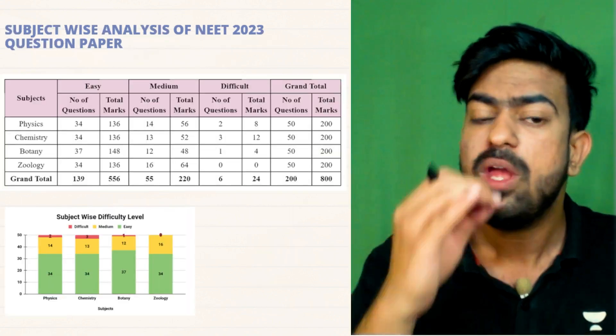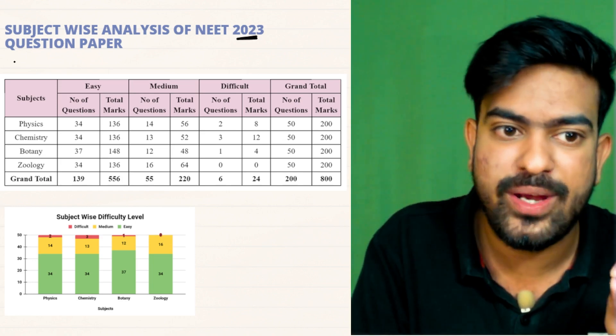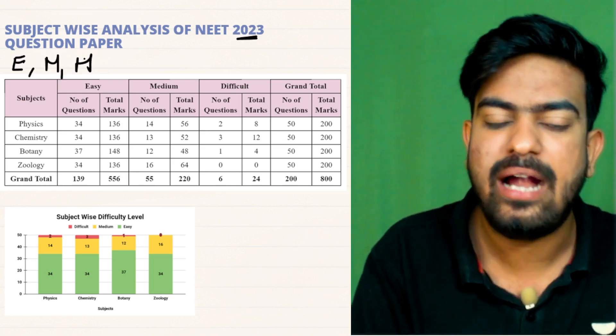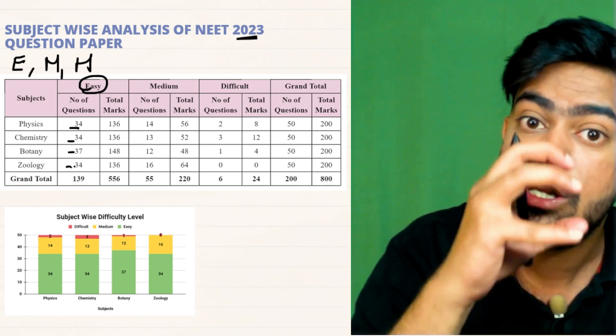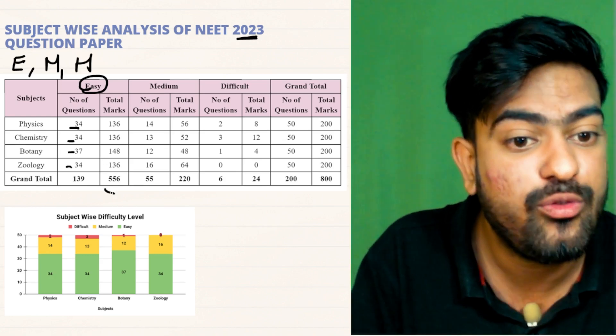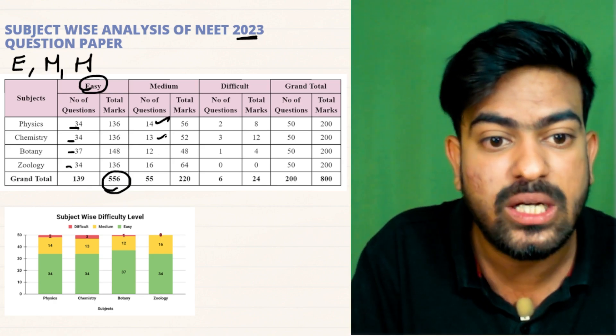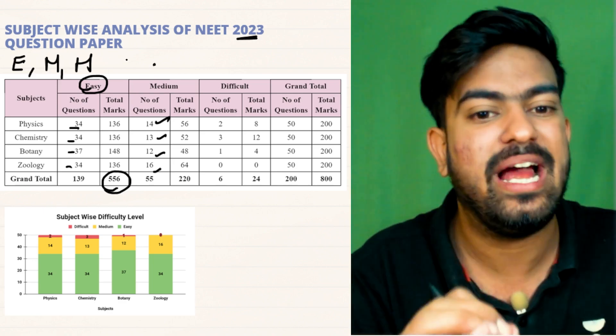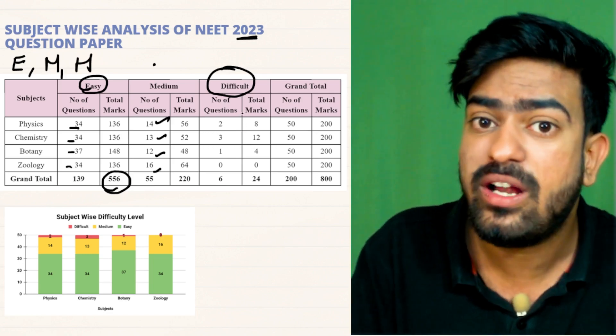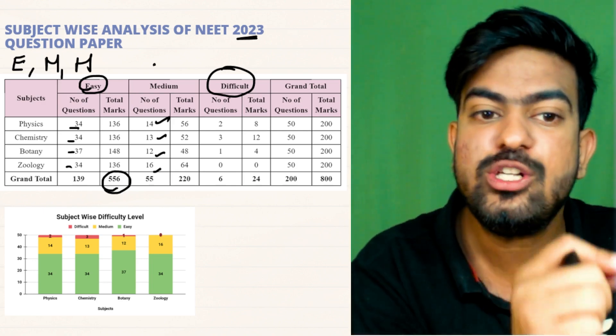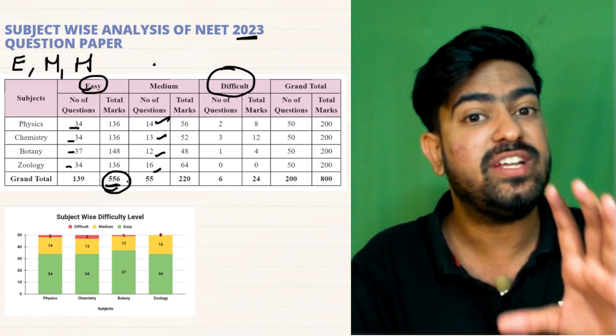Now see here, if I talk about the subject-wise analysis for 2023, in any question we have three types of questions, right? Easy, medium and hard. Now see here, if I talk about the easy questions: 34, 34, 37, 34, these are the number of easy questions which we are getting. At least focus on these marks. See, if you just solve the easy questions you would have got 556. So once do the easy part, then go into the medium. And the medium questions are 14, 13, 12, 16. If you do the easy and medium, your selection is guaranteed. And now just you have to focus on the difficult questions. And if you are able to win these difficult questions, AIIMS Delhi is your thing. So first of all focus on the easy question, then go into the medium question, and then practice the hard question.